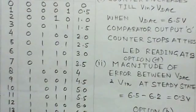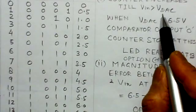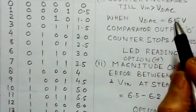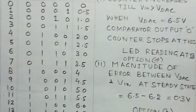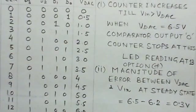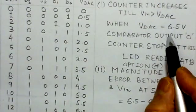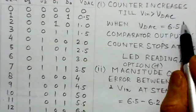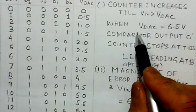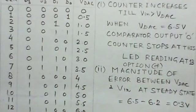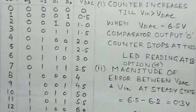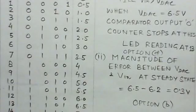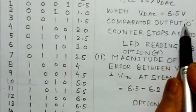So what we observe: as the counter count increases, we find that till VIN is greater than VDAC, and when VDAC becomes 6.5 volts here, you can see when it becomes 6.5, then comparator output would be zero because now it is greater than VIN.